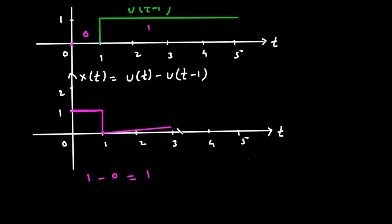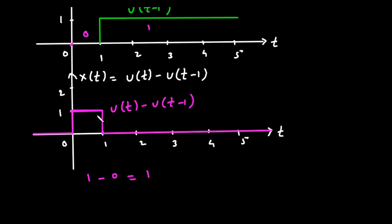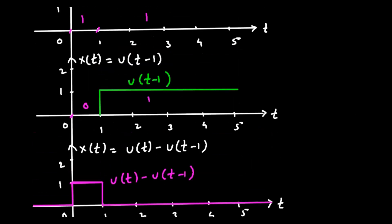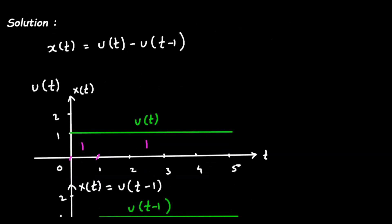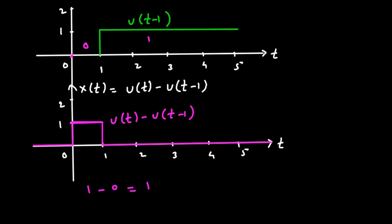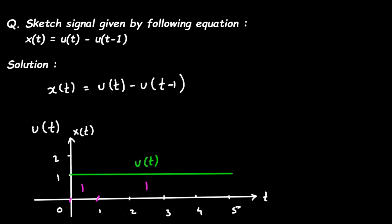So the final signal will look like this — it has amplitude 1 from t equals 0 to t equals 1, and then drops to 0 afterwards. This is our u of t minus u of t minus 1, which is the final answer for this problem. This is how we can sketch a signal using the given equation. Thank you for watching. Don't forget to like, share, and subscribe to this channel.